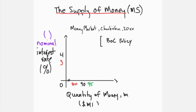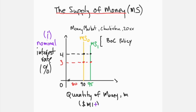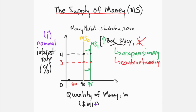The money supply function, MS, is illustrated as a vertical line, indicating that changes in nominal interest rates on the y-axis have no effect on the quantity of M1+ supplied to the economy. Using the data provided, 90 units of money are supplied at both three and four percent given MS0, and 95 units for MS1, which is to the right of MS0. The money supply is independent of interest rates because the Bank of Canada's policy determines the amount of money supplied. Money supply increases given expansionary policy and decreases given contractionary policy.